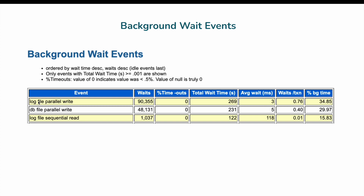Looking at the background wait events, the top one is log file parallel write — reading data into the redo log file — with an average wait of only 3 milliseconds, meaning there is no issue writing data to the redo log file. The second background wait event is db file parallel write, with only 5 milliseconds average wait, so there is no issue writing data blocks to data files. However, the third event, log file sequential read, is consuming 15 percent of database time with a very high average wait of 118 milliseconds, indicating an issue while reading the redo log files.